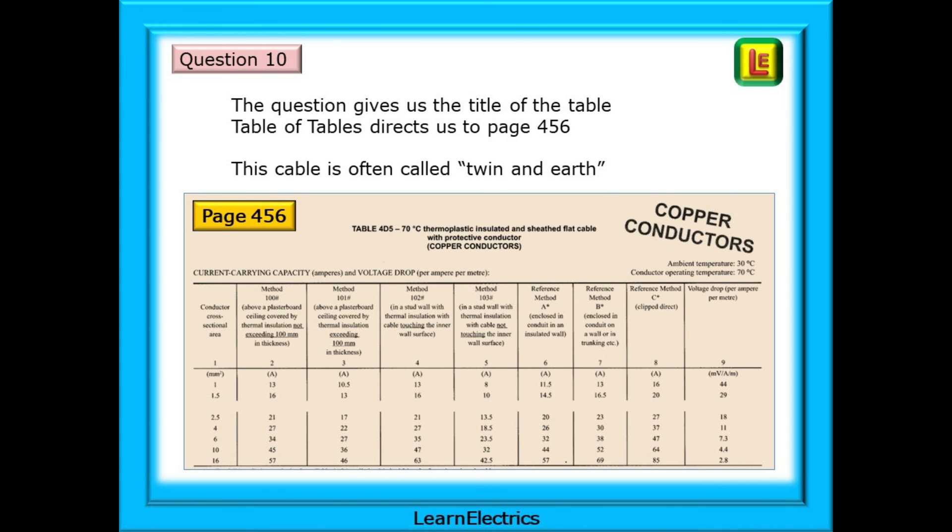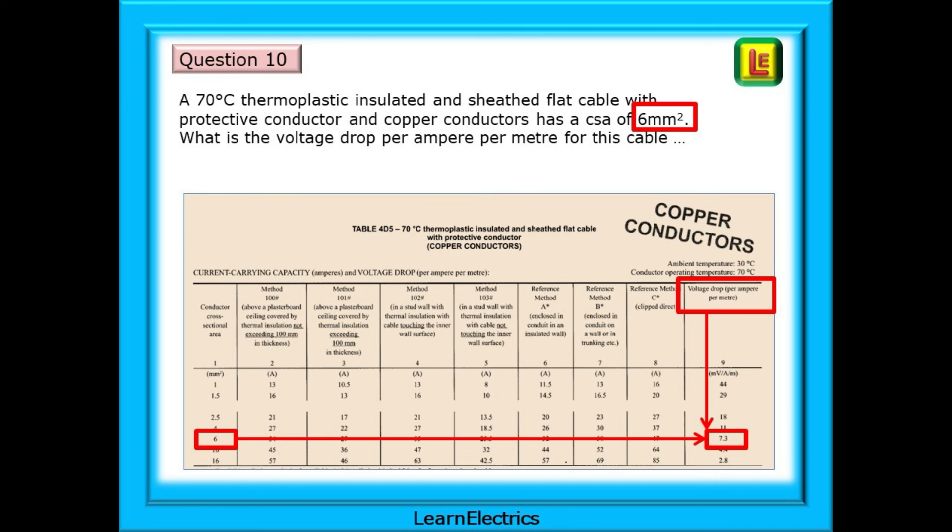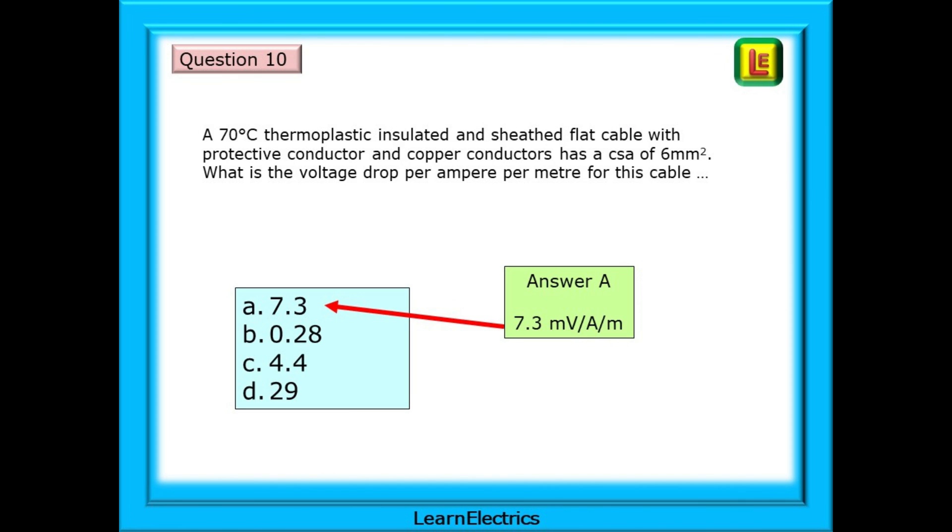The first line of the question gives us the title of the table. We can find this on page 575 of Table of Tables. It is Table 4D5 and we are sent to page 456. This sheathed flat cable with a protective conductor is what we know as Twin and Earth cable. Remember this one. You will not find a table called Twin and Earth. This is it. Follow the question. All it's asking is if the live conductor size is 6 square millimetres then what is the voltage drop per ampere per metre? Don't calculate anything. Just look at the table. Find 6 on the left hand side. Trace along the row to the right hand side and read off the answer. 7.3. Our answer is A. 7.3 millivolts per ampere per metre. That's it. That's all that is asked. And that was the last question on Table of Tables.